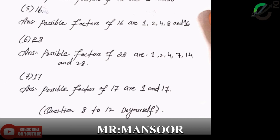Now come to question number 5. Question number 5 is given that 16. Answer: possible factors of 16 are 1, 2, 4, 8 and 16.